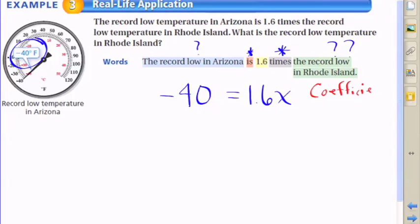The coefficient here is 1.6, as I'm pointing out. 1.6 times the variable. Since that is the coefficient and we're multiplying, we want to divide by the coefficient, 1.6 on both sides.